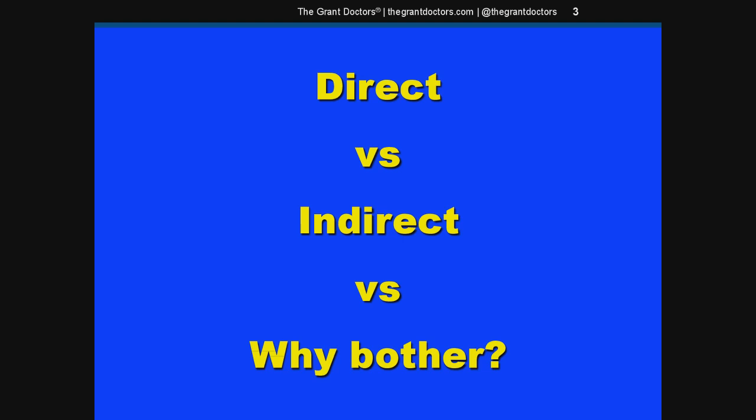Just as a recap for those that might not be too familiar with indirect, the point of having a federal indirect rate is so the federal government can reimburse grantees for a portion of the administrative expenses incurred to implement a grant program.